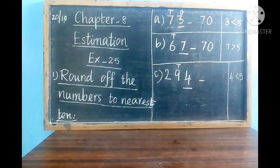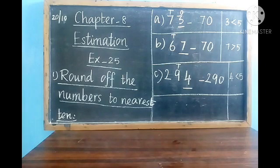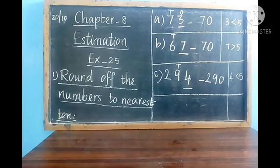The answer for the C sum is 290. In the ones place we put 0, and 9 remains as it is in the tens place, and 2 in the hundreds place remains as it is.